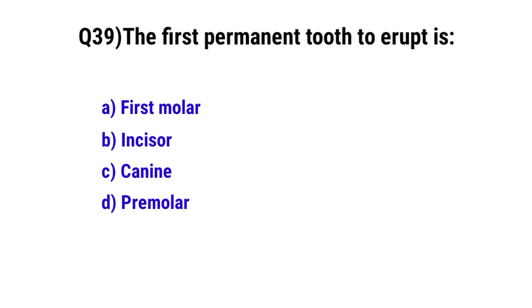Question number thirty-nine: The first permanent tooth to erupt. The correct option is A, first molar.